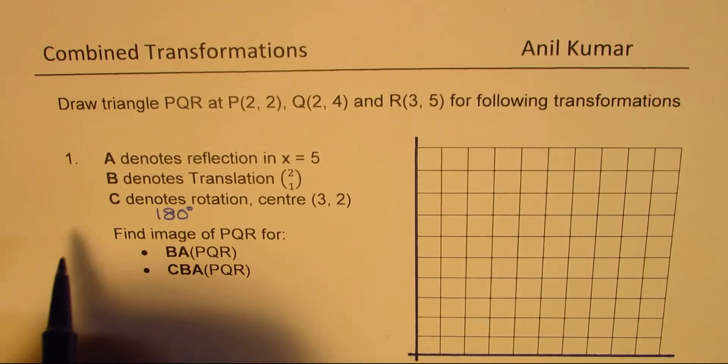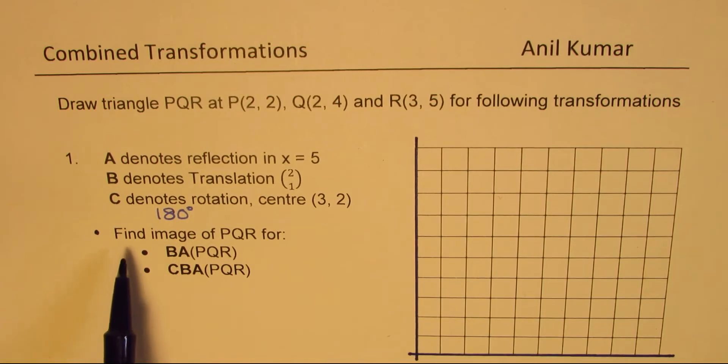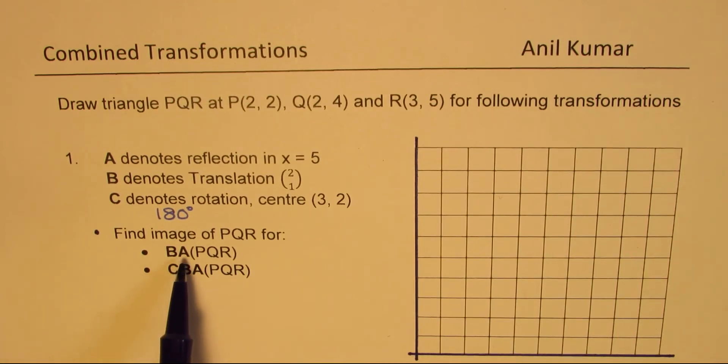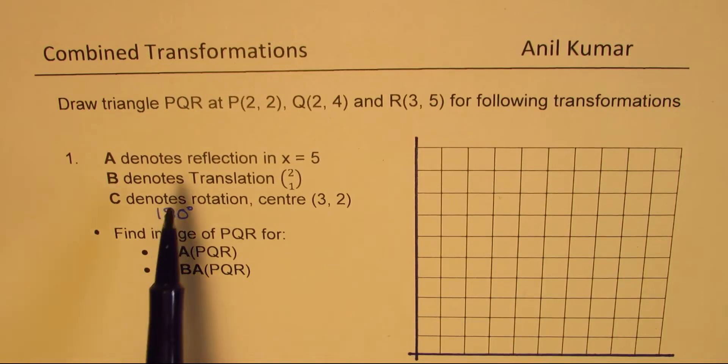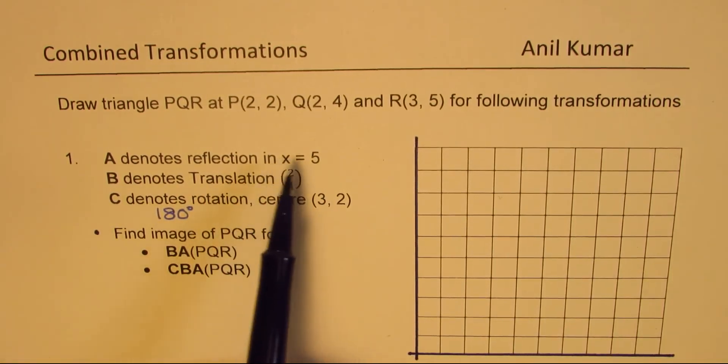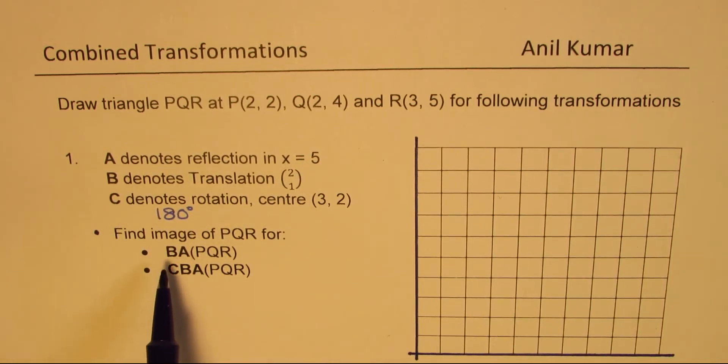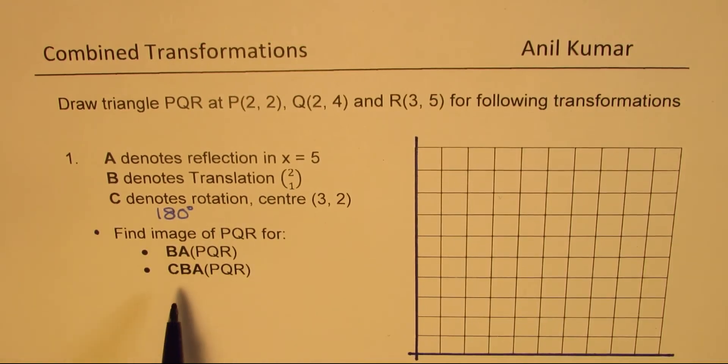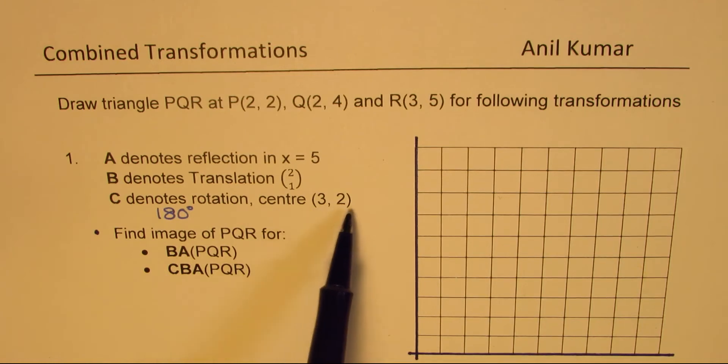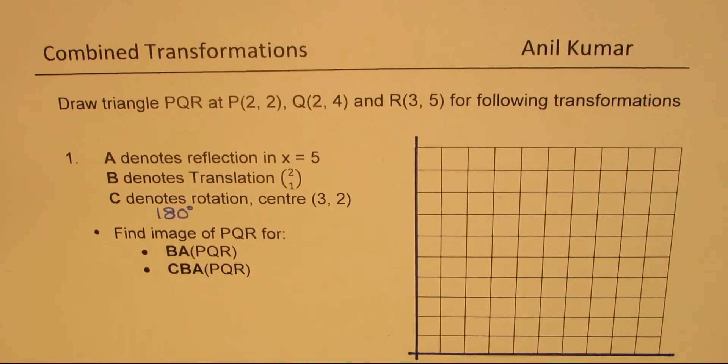Now, what do we need to do here? We need to do two operations. Find image of PQR for the combination of B and A on PQR. When you are given like this, you have to perform the inside operation, which is A first. A for us is reflection on x equals 5. Once you do that, then you perform operation B, which is translation (2,1). Second transformation is that first you do the reflection on x equals 5, then translation, then rotation with center at (3,2) by 180 degrees. You can pause the video now, answer, and then look into my suggestions.